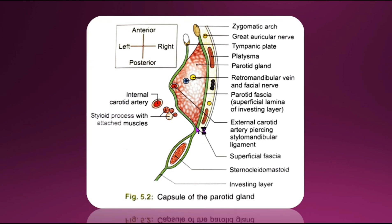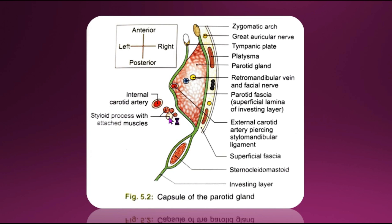The split forms a superficial lamina and a deep lamina. The superficial lamina is attached to the zygomatic arch. The deep lamina is attached to the styloid process, the tympanic plate, the angle, and the posterior border of the ramus of the mandible.